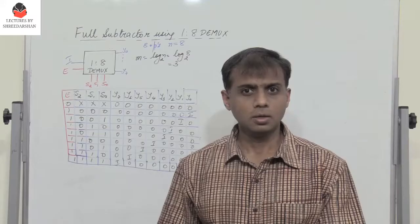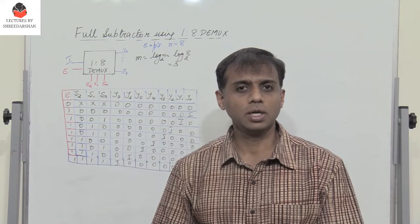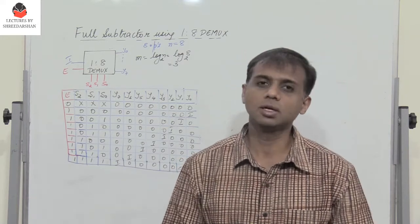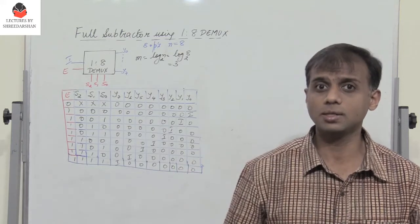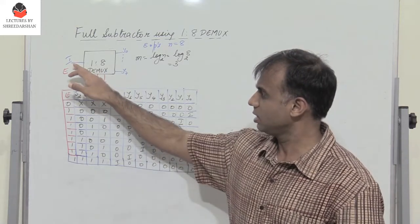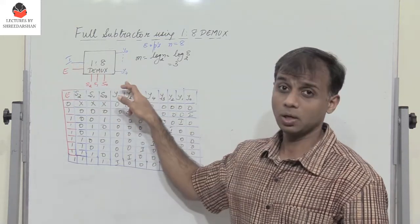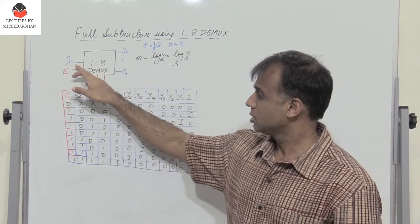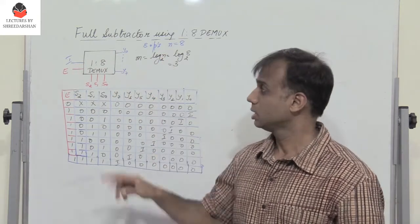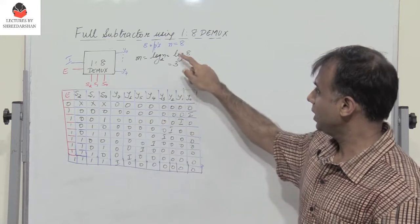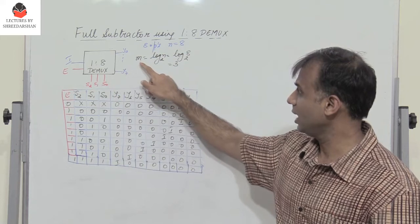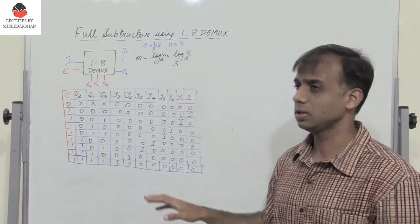Hello friends and students. In the previous video segments we studied the working of a D-multiplexer and we saw the design of 1-to-2, 1-to-4, and 1-to-8 D-multiplexer. A D-multiplexer has a single input and multiple outputs. We distribute the input to one of the outputs defined by the select lines. If we have n number of outputs, the number of select lines m equals log n to base 2.